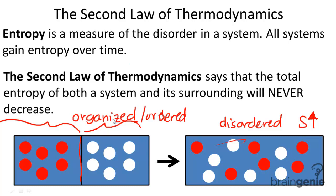The second law of thermodynamics says that the total entropy of both the system and the surroundings will never decrease. Essentially, this means that disorder in the universe is always, always increasing.